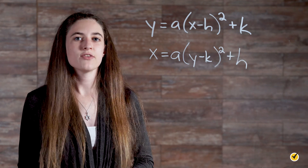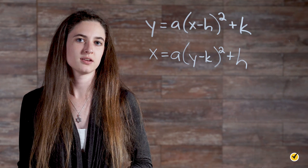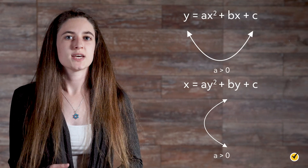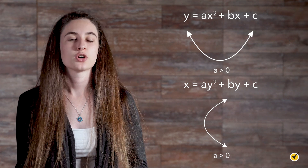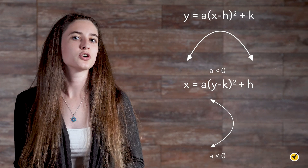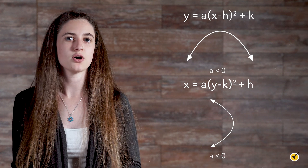As you can see, the a value is a common element in both forms of the quadratic equation, and this value holds the key to which direction the parabola will open. If the a value is positive, equations with the x variable squared will graph as parabolas that open up, and equations with the y variable squared will graph as parabolas that open right. If the a value is negative, equations with the x variable squared will graph as parabolas that open down, and equations with the y variable squared will graph as parabolas that open left.